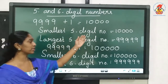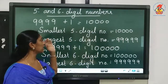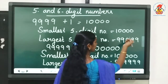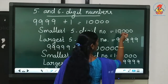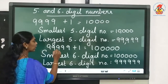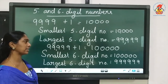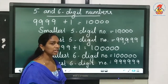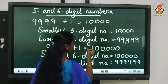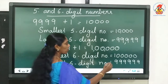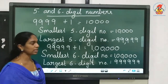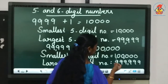The smallest 5 digit number is 10,000 and the largest 5 digit number is 99,999. When you add 1 to 99,999, we get the smallest 6 digit number, which is 1,00,000. And the largest 6 digit number is 9,99,999.